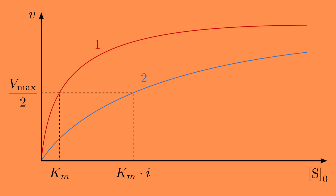As you can see, Vmax remains the same, which makes sense, because if we add enough substrate, it will basically outcompete the inhibitor and attach to the available enzymes before the inhibitor has the opportunity to do so.